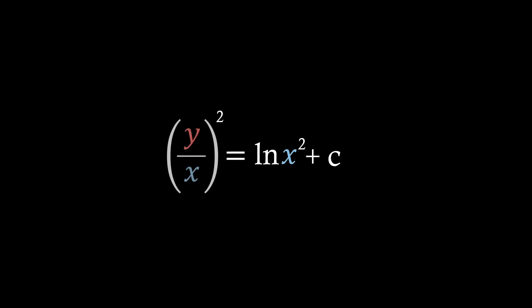Now we just need to substitute back in y over x for t and then we can solve for y. So let's just square root both sides and then multiply by x. This actually leaves us with our final solution where we get y equals x times the square root of ln x squared plus c.